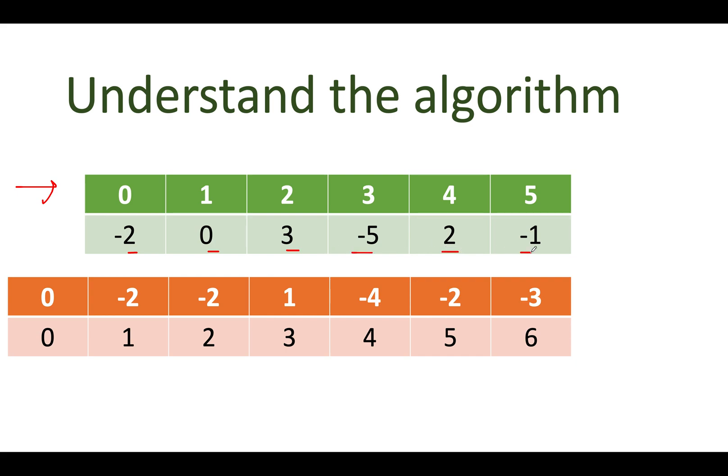So in the prefix sum approach, we do some preprocessing on the input matrix and that preprocessing helps us in finding out the sum between specified range starting from the leftmost index up to the rightmost index in constant time. And what is that preprocessing? You create an array that is of size 1 higher than the input array that is given. So I have created a new array starting from the 0th index up till the 6th index and then you continue to build this array.